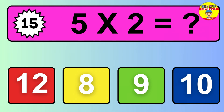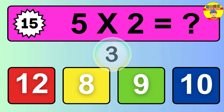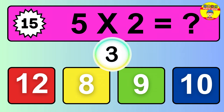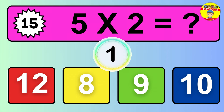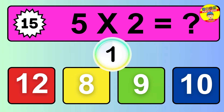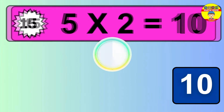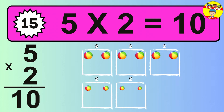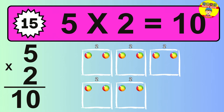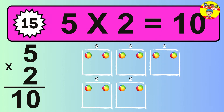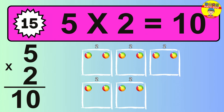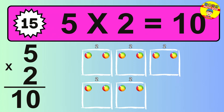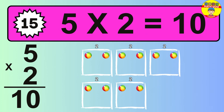Question 15. Five times two equals what? The answer is five times two is 10. To calculate, we have five groups with two balls each one. So, how many balls do we have? Ten balls.